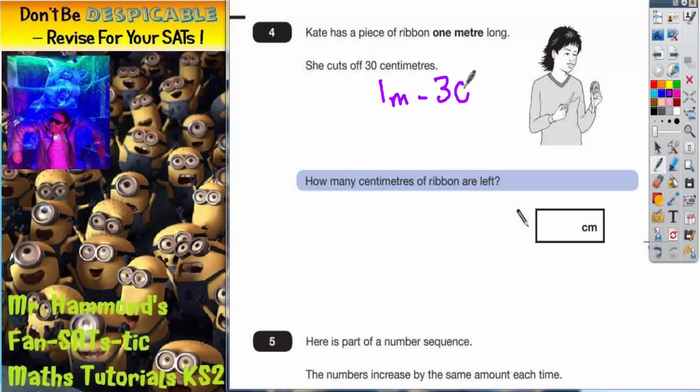But we can't just do one take away 30. What we have to do is we have to make sure we have the correct units. The easiest thing to do is to change one meter into centimeters.